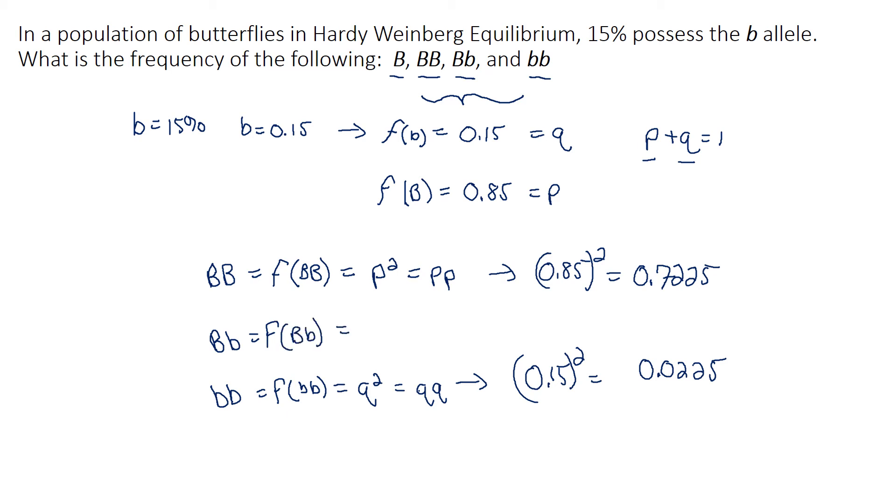So now we've got that. Now we can find the heterozygotes. So that is the big B little b. So that's the frequency of the big B little b, which is equal to 2 times P times Q. So there's no other way to write that other than 2 times P times Q. And the reason why there is a 2 there is because there's two ways you can get a heterozygote. So if you remember the Punnett square, let me go ahead and show you this right now.